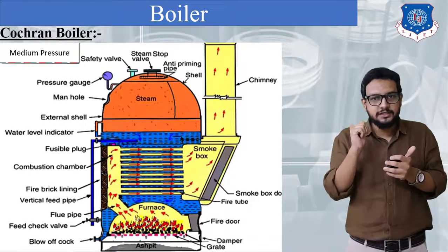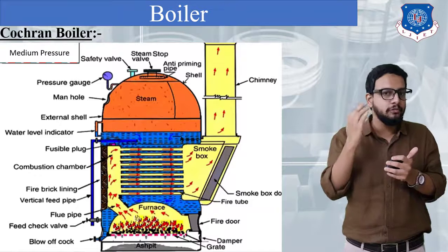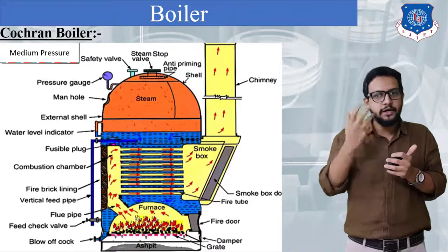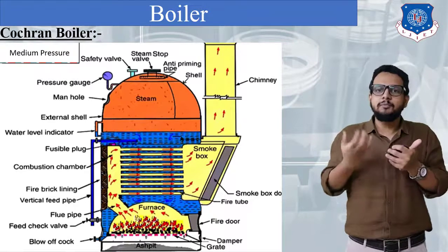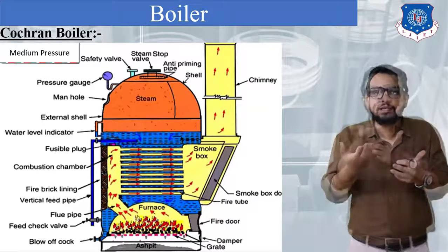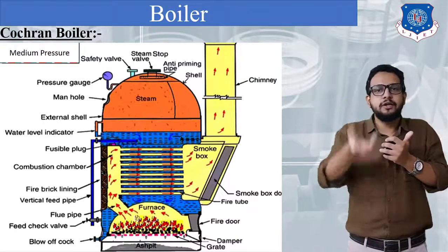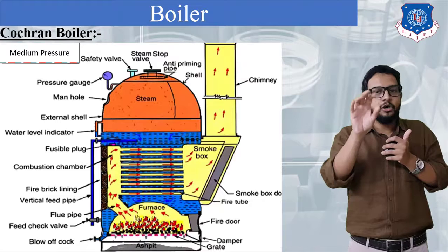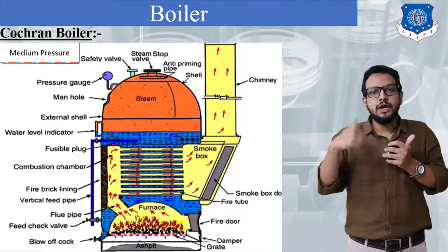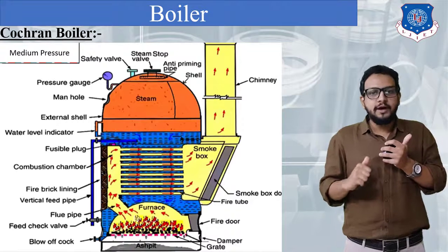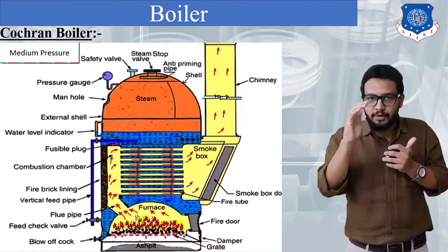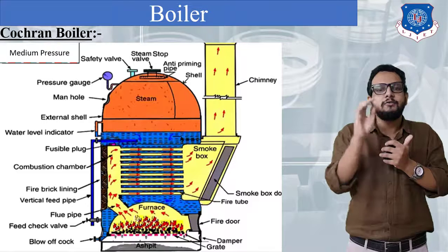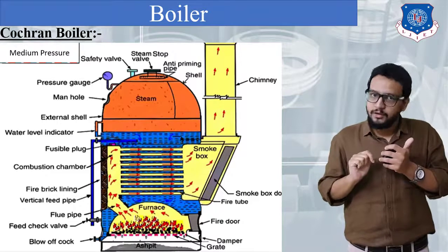Meanwhile, surrounding the fire tubes there is water. Heat transfer will take place from the hot gases inside the tube to the surrounding water. The hot gases will heat up the tube, the temperature of the tube will increase, and finally the water in contact with the tube will also be heated up. Gradually the formation of vapour will take place, and all the vapour with low density will be collected on the top portion of the boiler shell. The steam will pass into the anti-priming pipe through which we can obtain dry steam, and after opening the steam stop valve we can get dry steam from this Cochran boiler.